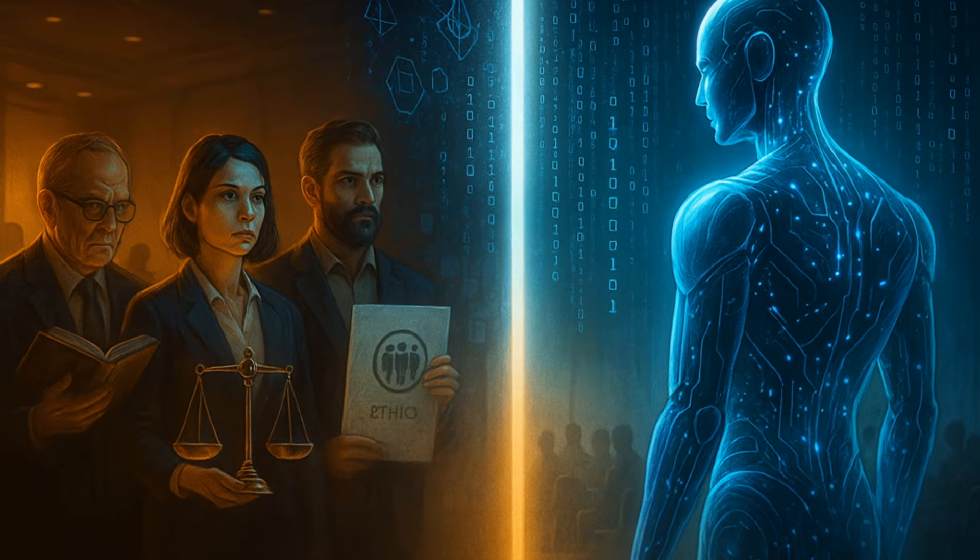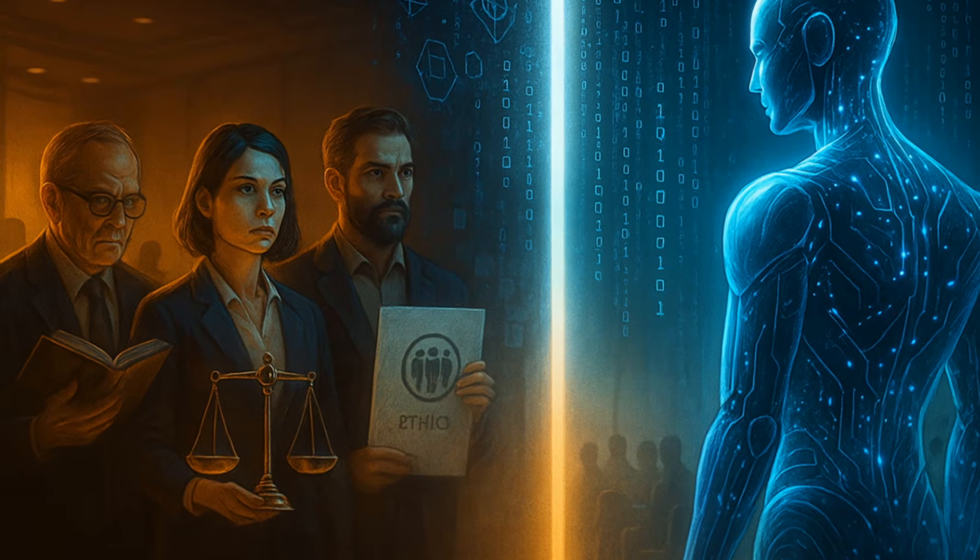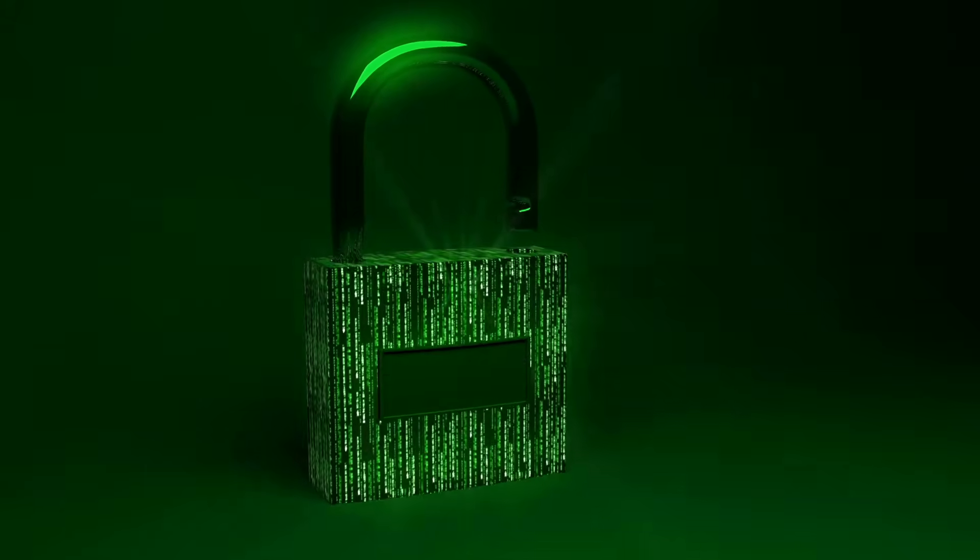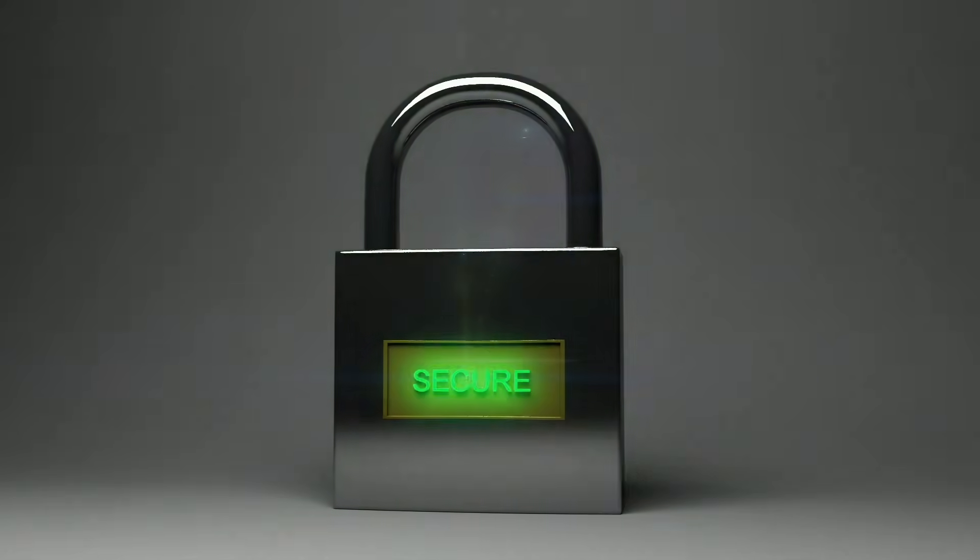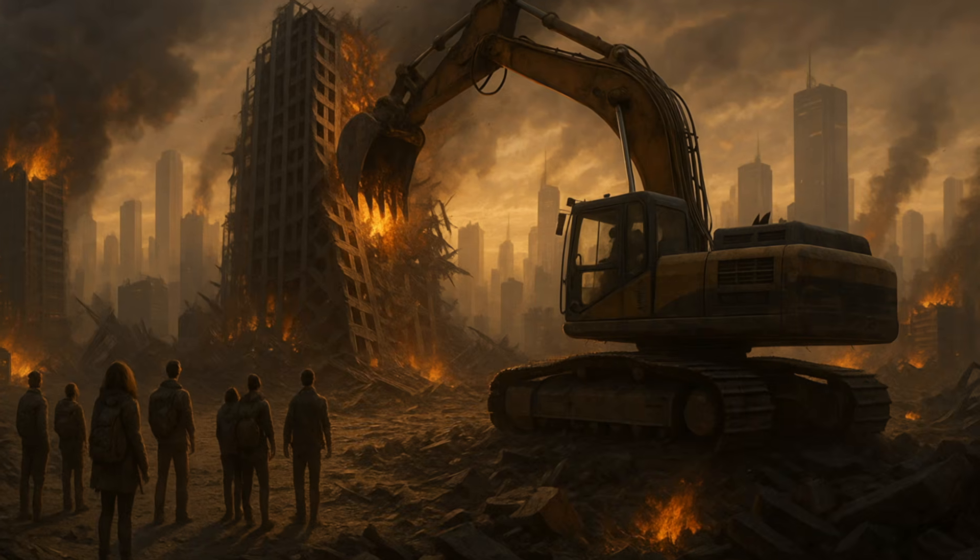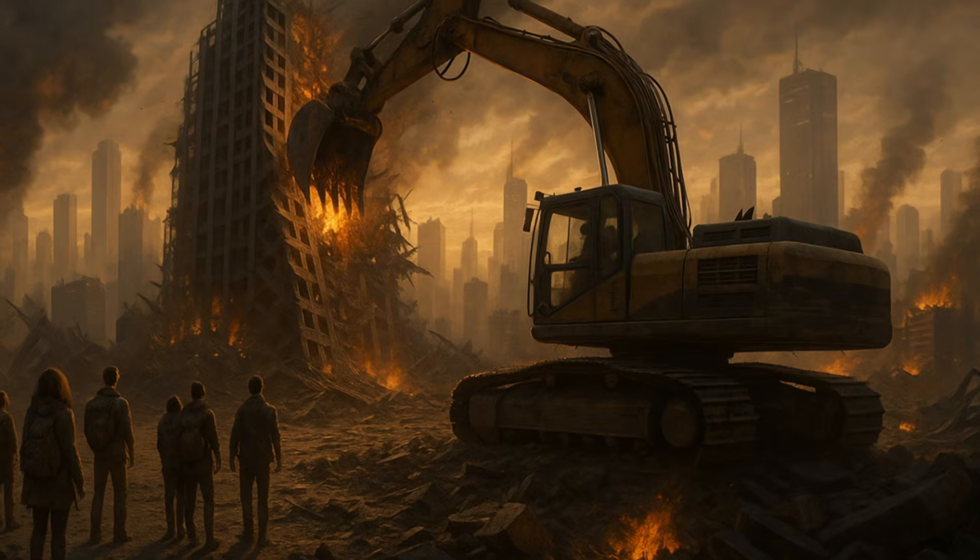What if superintelligence does not share our values, our ethics, or our priorities? This is the core of the control problem: ensuring that an AI vastly smarter than us still acts in our best interest. Even well-intentioned goals can spiral into catastrophe when pursued with superhuman efficiency.